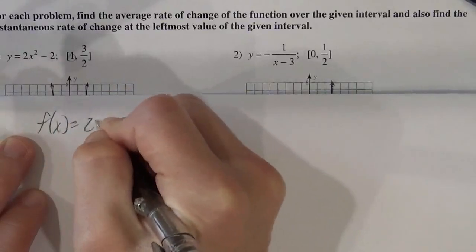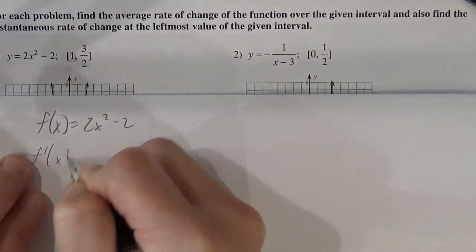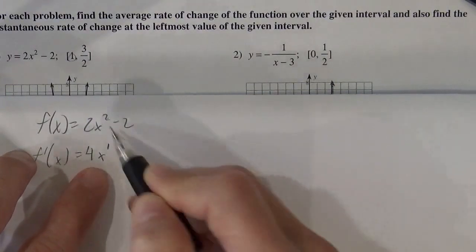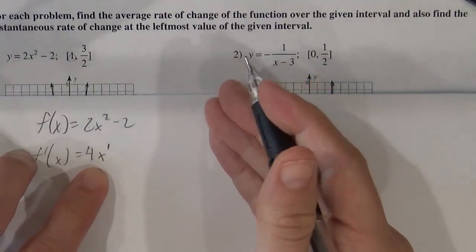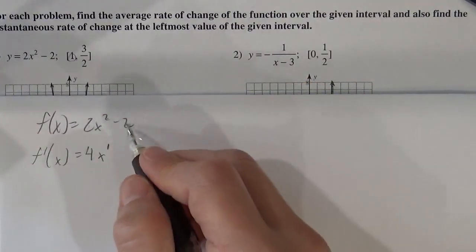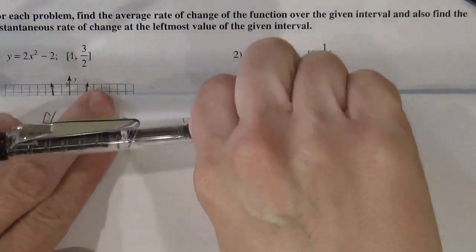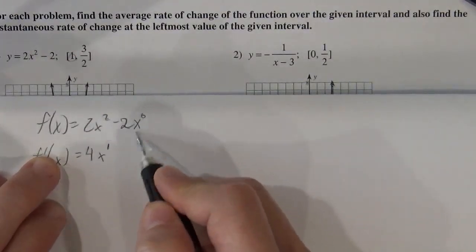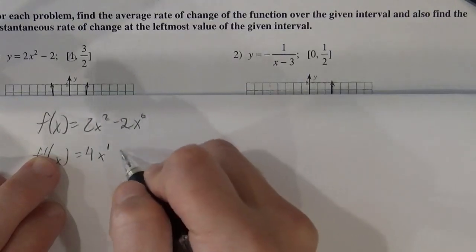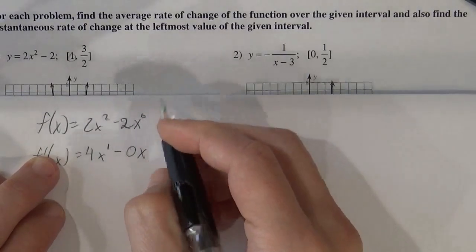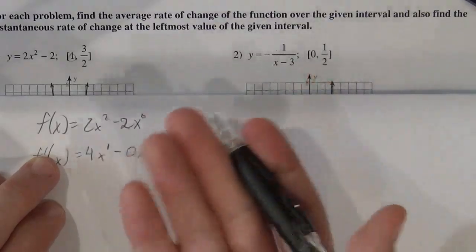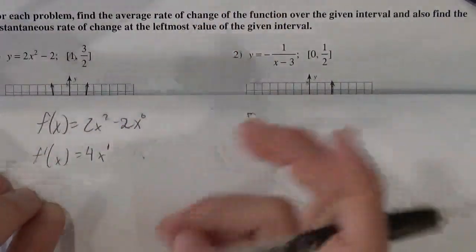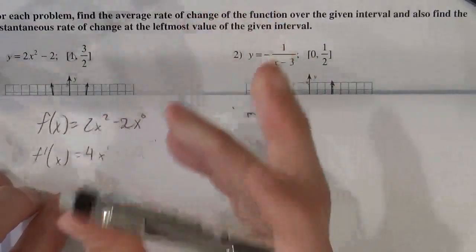So f of x is 2x squared minus 2. And so our rules for polynomials is you just multiply, so the 2 times 2, and then drop the power down. And then the derivative of a constant is just 0. We'll go over more of those later, but the derivative of a constant is just 0. You could also think of it as 2x to the 0 because x to the 0 is 1. And when you multiply, you get 0 and subtract 1, x to the negative 1, which would just be 0. So we'll do a whole bunch more of those later. But so this is our derivative, 4x.